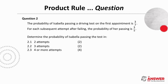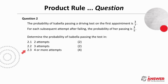Question 2 says the probability of Isabella passing a driving test on the first appointment is 3/7, and then for each subsequent attempt after failing, the probability of her passing is 3/5. They want us to determine the probability of Isabella passing the test in 2, then 3, then 4 or more attempts. Pause the video and give this question a try now.